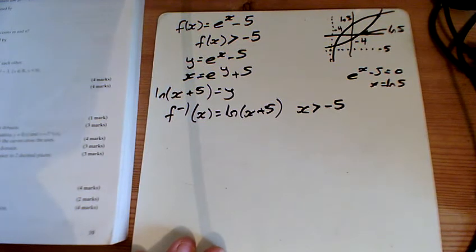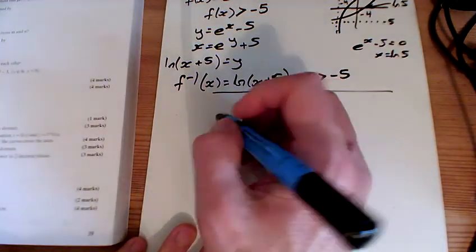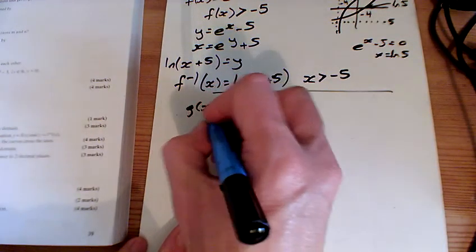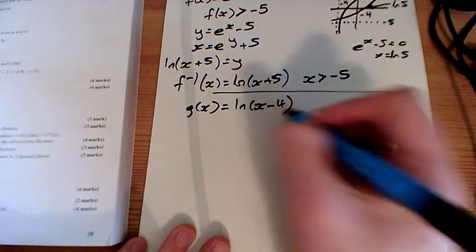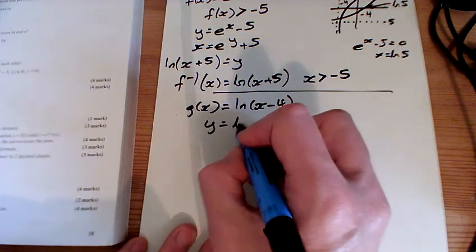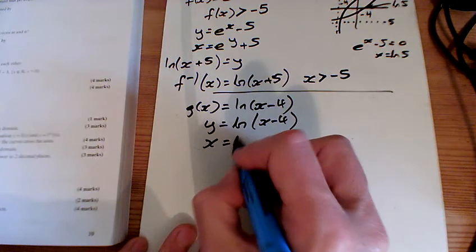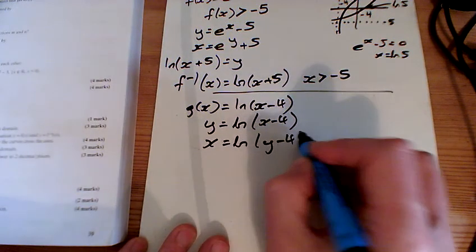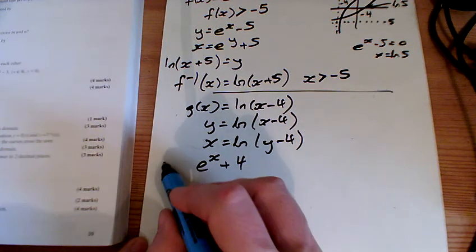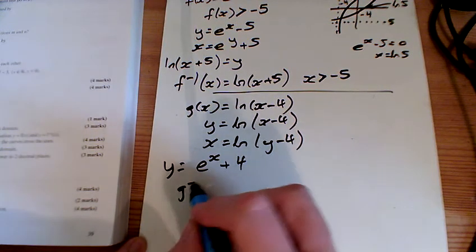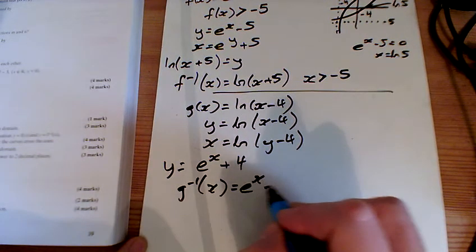What more have we got to do? Part D just looks totally different, doesn't it? So we've got g of x is the LN of x minus 4. Seems to have nothing to do with the rest of the question. So to rearrange that one, I need to do e to both sides and add 4 to it. And so the inverse of g is e to the x add 4.